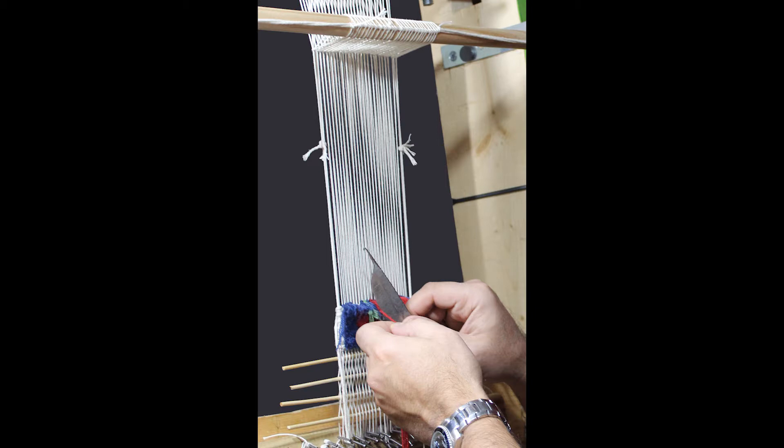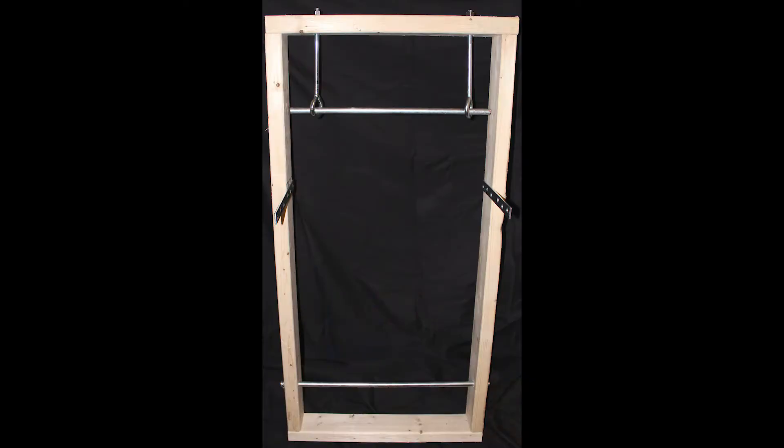There's a big difference in weaving a hand-knotted rug versus weaving a kilim. When weaving a hand-knotted rug, the pressure on the warps is far more than what is needed to weave a kilim. What we are building here is a modification of a larger loom. This loom will be plenty strong to weave a kilim.